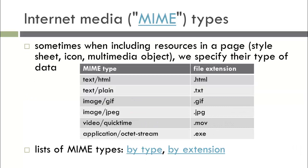Internet Media, or MIME types, determine what to do with a file when it is requested from the server. For instance, an HTML file should render the HTML as we know it. A .txt file might be displayed in the web browser so the user can read the information. A .exe file, however, should not be executed immediately — rather, it should trigger a download to the computer so the user can save it or execute it later.